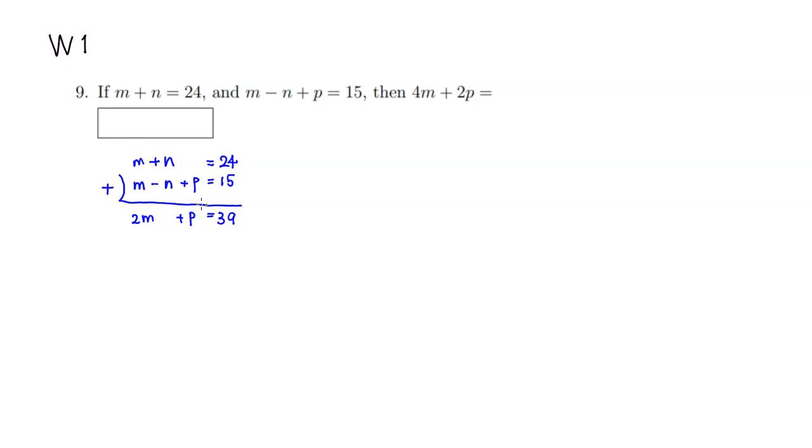All right, then we're interested in 4m plus 2p. We don't quite have that, but this is only half of what we want. So what you can do is multiply by 2. That way you get 2m times 2 is 4m, p times 2 is 2p, and 39 times 2 is 78.